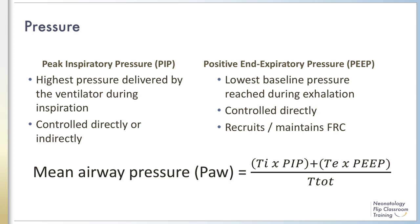Positive end-expiratory pressure, or PEEP, is the baseline pressure of the ventilator and is directly set by the clinician. This baseline pressure is the lowest pressure reached during expiration. The use of adequate PEEP recruits and maintains functional residual capacity, helps maintain lung volume during expiration, improves V/Q matching, and prevents alveolar collapse. Though an elevated PEEP decreases the pressure gradient between PIP and PEEP, which can lead to smaller tidal volumes and hypercarbia if not chosen carefully.